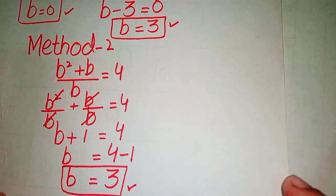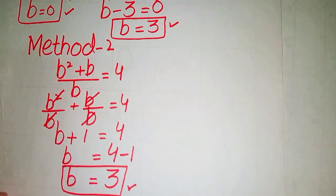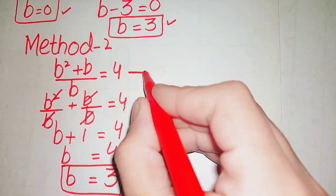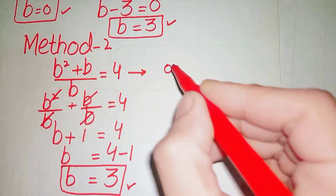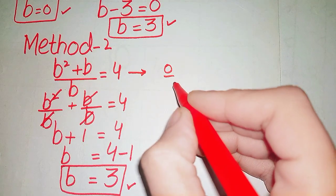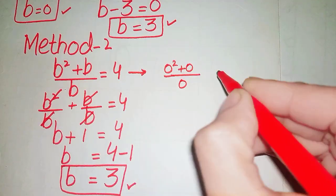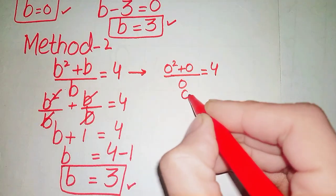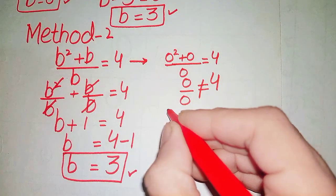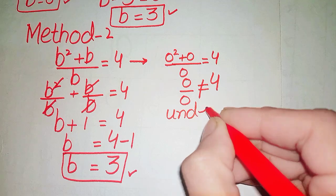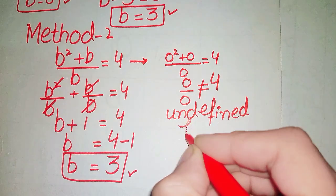Now we verify whether both values b = 0 and b = 3 satisfy our equation. Substituting b = 0: (0 squared + 0) / 0 = 0/0, which is an undefined form and does not equal 4, so b = 0 is not a valid solution.